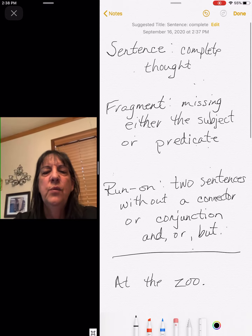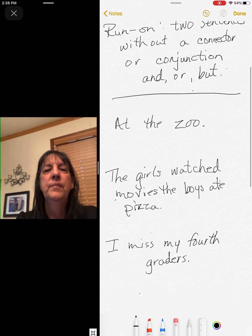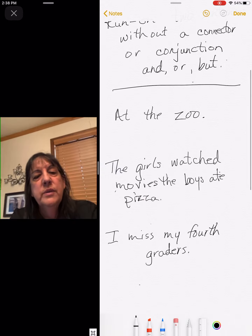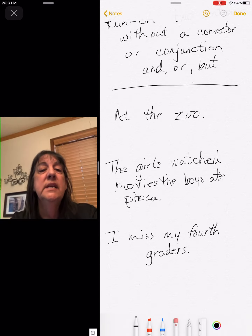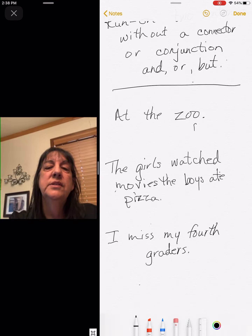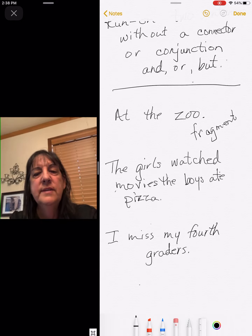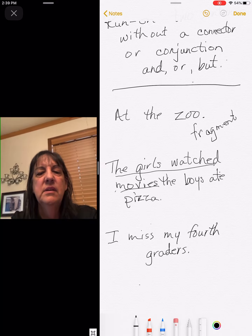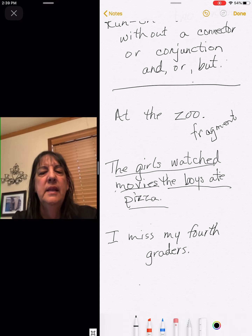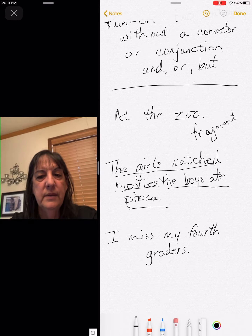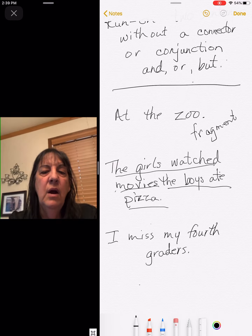So here's a clue: 'at the zoo' — who is at the zoo? We don't know, so we're missing our subject. That makes it a fragment. Now: 'The girls watched movies. The boys ate pizza.' I have two sentences together, but I don't have a connector word like 'and' or 'but,' so this would be a run-on sentence.